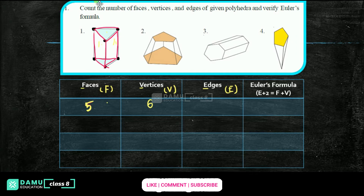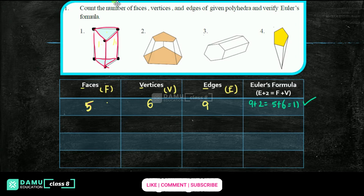Top 3, down 3, surrounding 3 — so 9 edges. Now checking Euler's formula: E plus 2 equals 9 plus 2 = 11; F plus V equals 5 plus 6 = 11. So 11 equals 11 — yes, Euler's formula is applicable for the first figure.